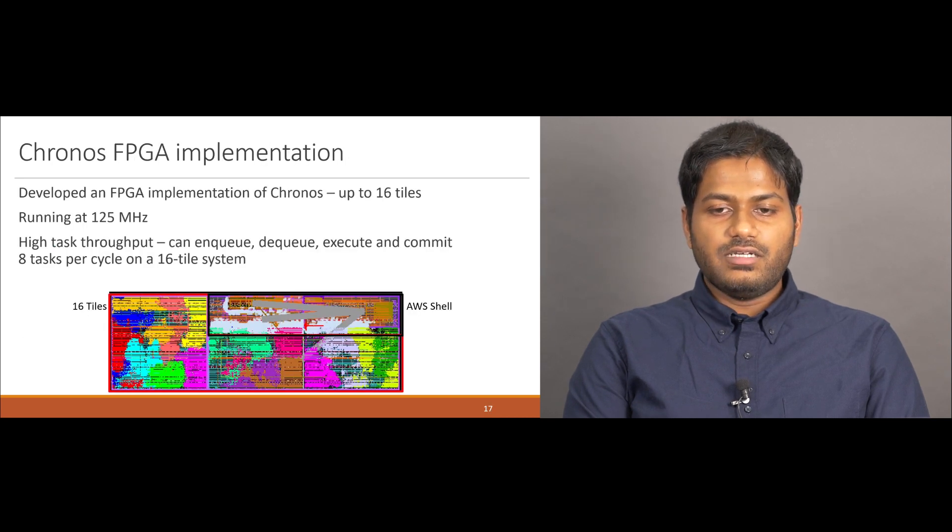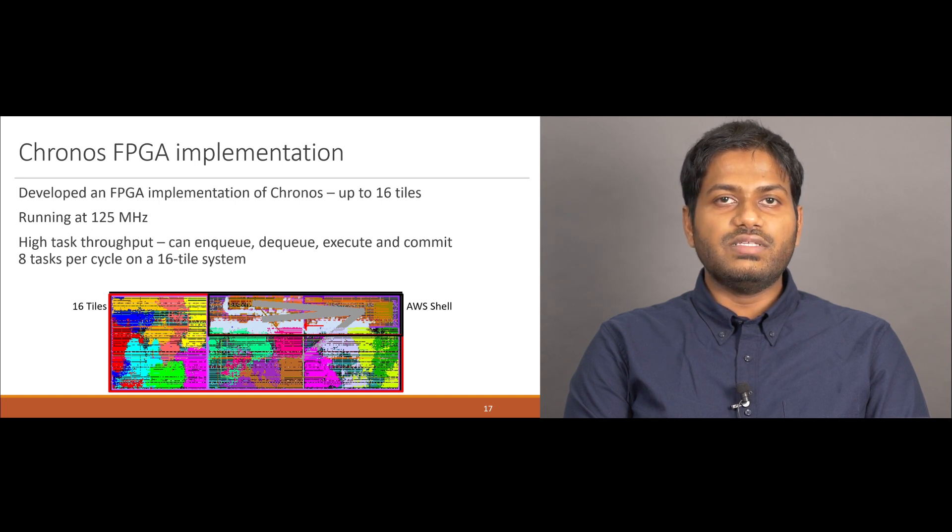Using these mechanisms, we built an FPGA implementation of Kronos, which can fit up to 16 tiles, and running at a frequency of 125 MHz. Since Kronos tasks are small, it is important that this implementation supports a high task throughput. On a 16 tile system, our implementation can enqueue, dequeue, execute, and commit 8 tasks per cycle. This figure shows how a 16 tile Kronos instance is mapped onto the FPGA, where different colors represent different tiles.